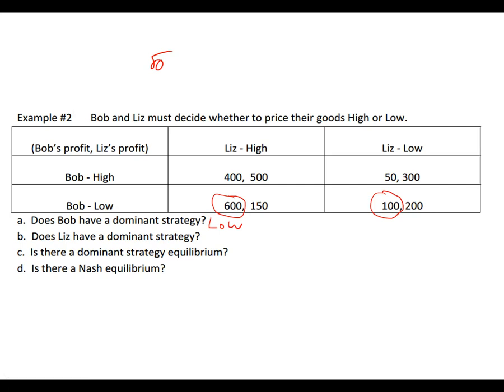Does Liz have a dominant strategy? Let's say Bob prices high. We're looking at the second option: it's either $300 or $500, and $500 is better. So for Liz, she's going to go high when Bob goes high. Now if Bob goes low, she can either go low or go high, and $200 is more than $150. So she is going to go low. Does Liz have a dominant strategy? She does not.